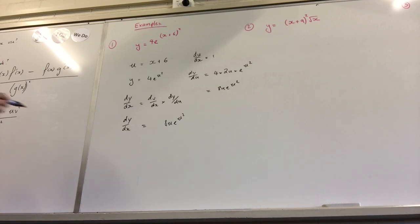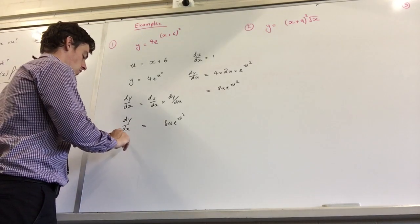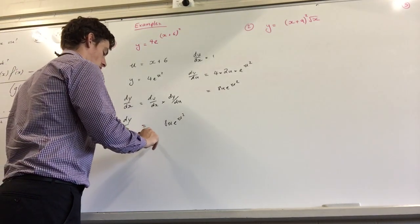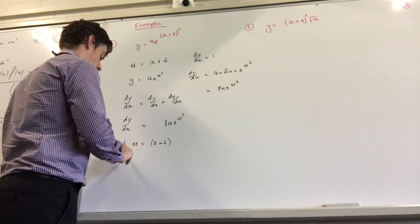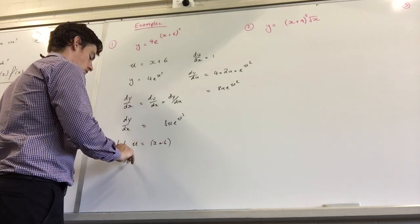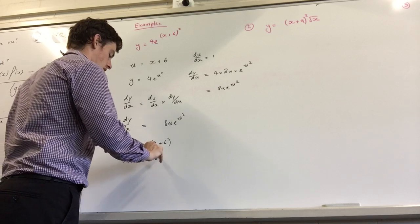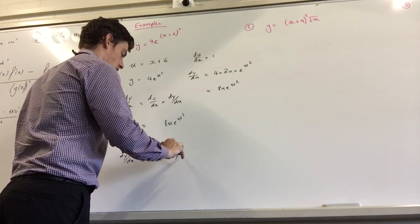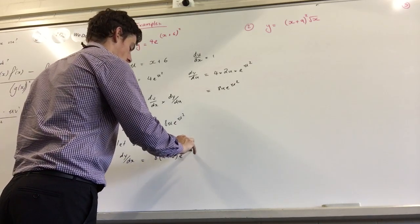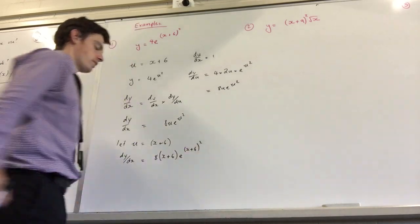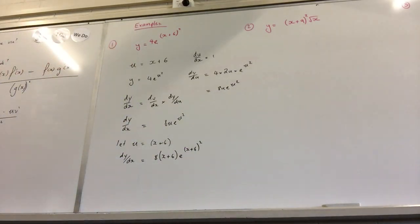Now what do I do? Substitute u back. So I'd write u equals x plus 6. dy/dx equals 8(x plus 6) e to the (x plus 6) squared. Very good.